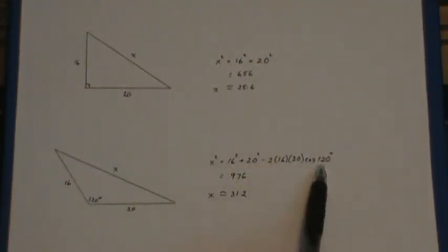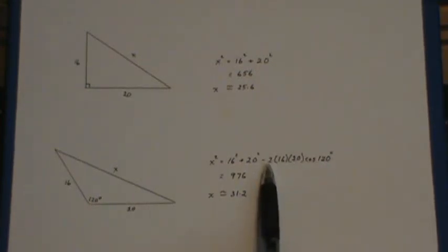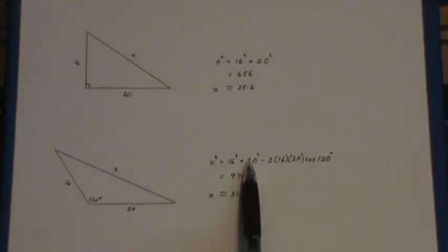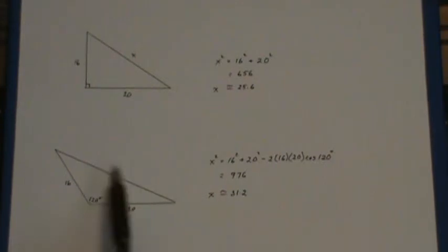Well it's because when you're taking the cosine of an angle larger than 90, between 90 and 180, you get a negative value here, which actually adds to the 16 squared plus 20 squared. And you see we get 976 as opposed to 656 back there. And you get a longer side.